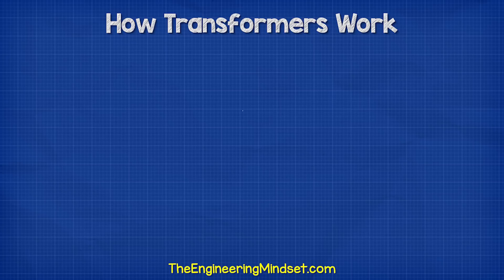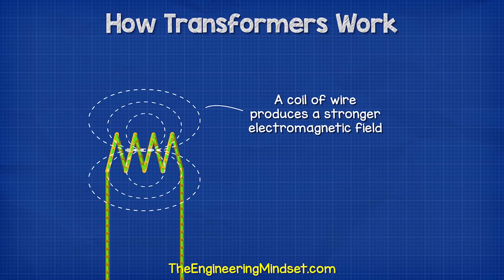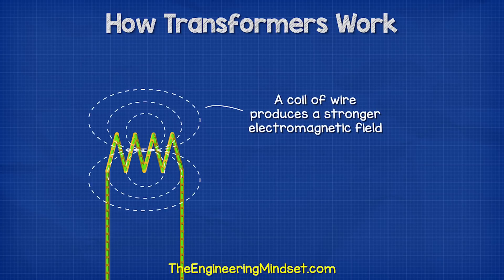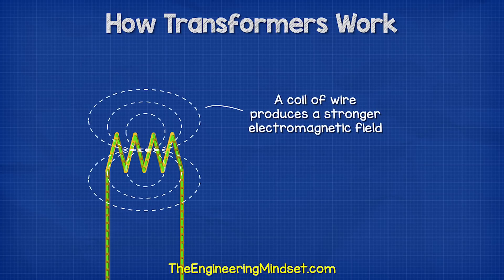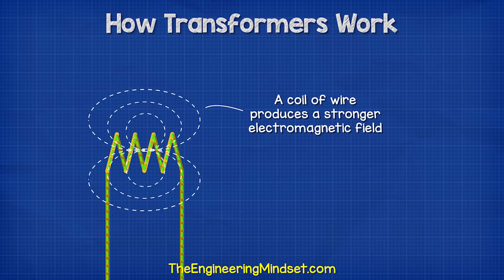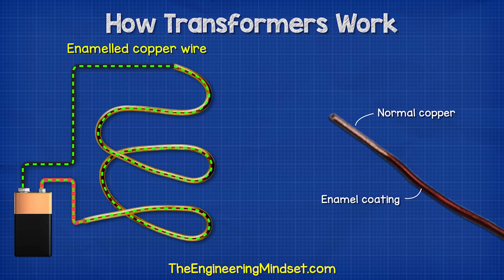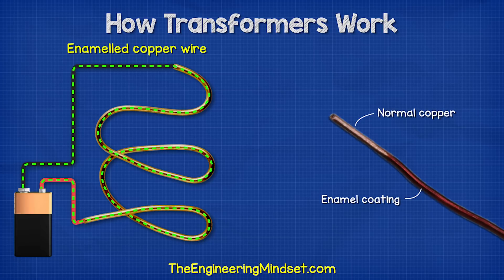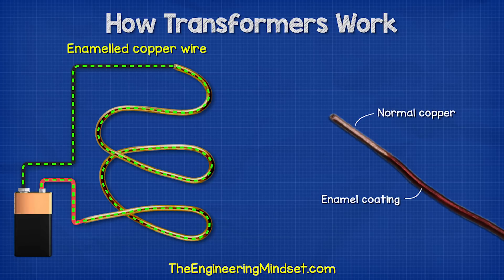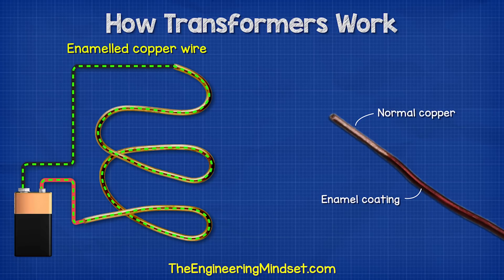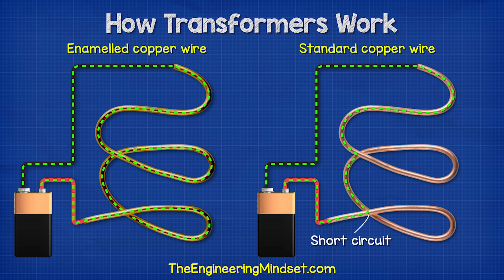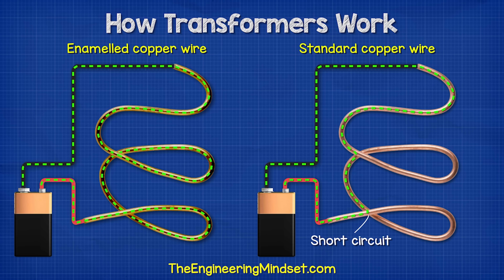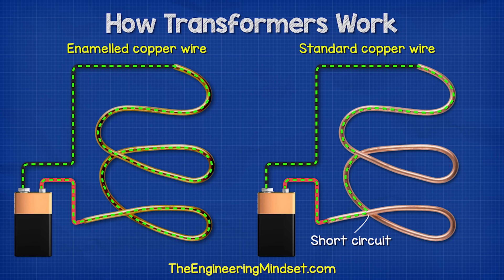When we wrap the wire into a coil, this magnetic field becomes even stronger. The wire has to be insulated with an enamel coating to ensure the current flows along the entire length. Otherwise, it will just take the shortest route and it will not work.